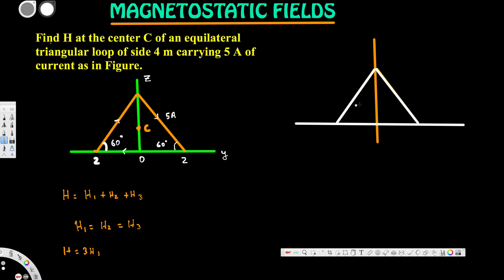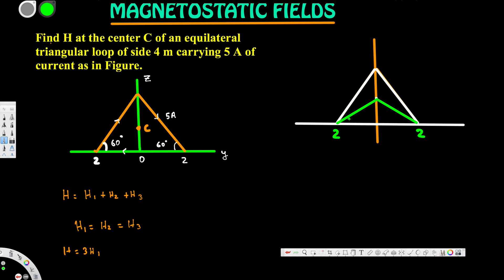Let's draw the small inner triangle with a different color. At the center, we have angles of 30 degrees, 30 degrees, 150 degrees, and 150 degrees. The current is flowing at 5 amperes and this is point C.